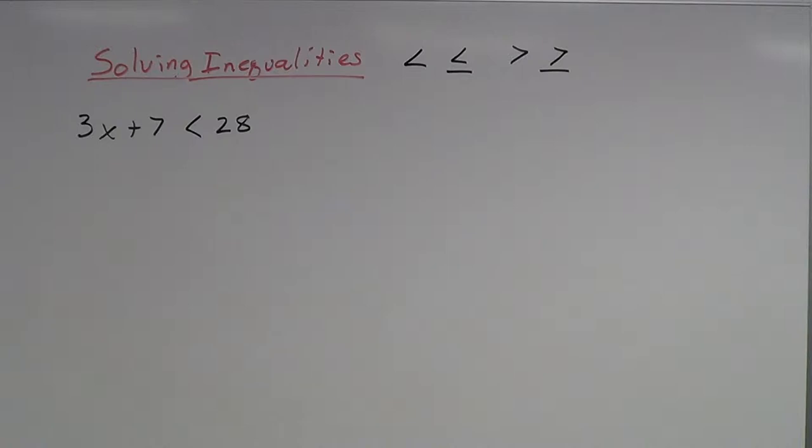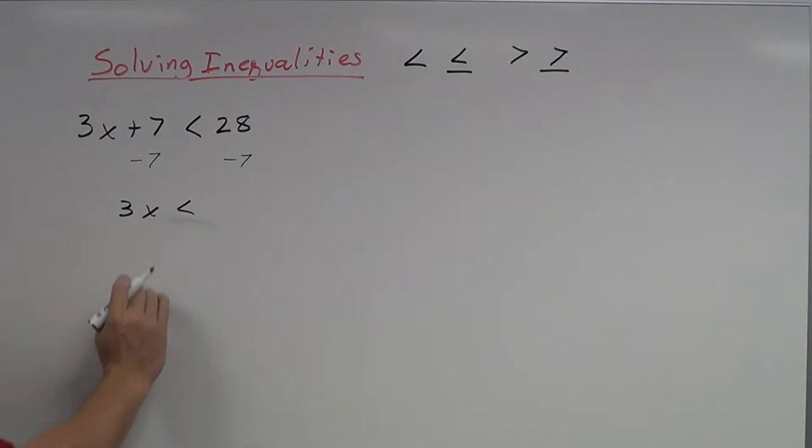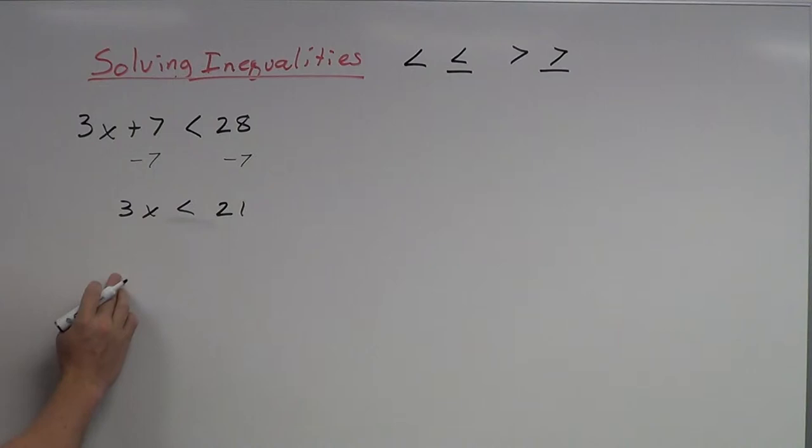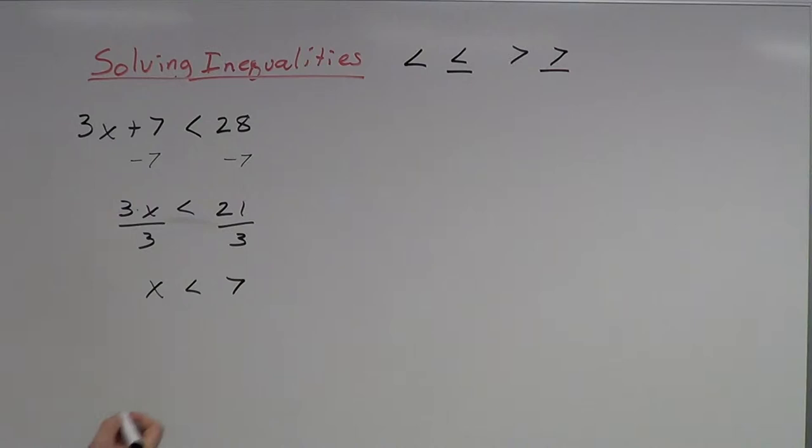When I'm solving this, I want to do it just like any other equation. I want to get rid of this 7 first, so subtract 7 from both sides. So 3x is less than 21. And this 3 is multiplying times x, so I'm going to divide by 3, which means x is less than 7.